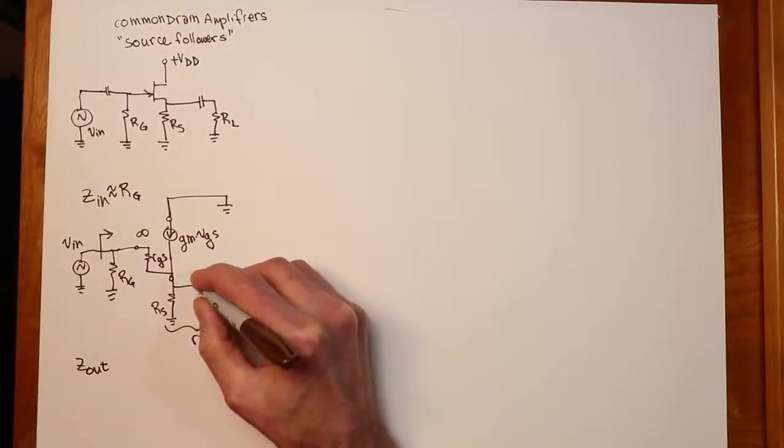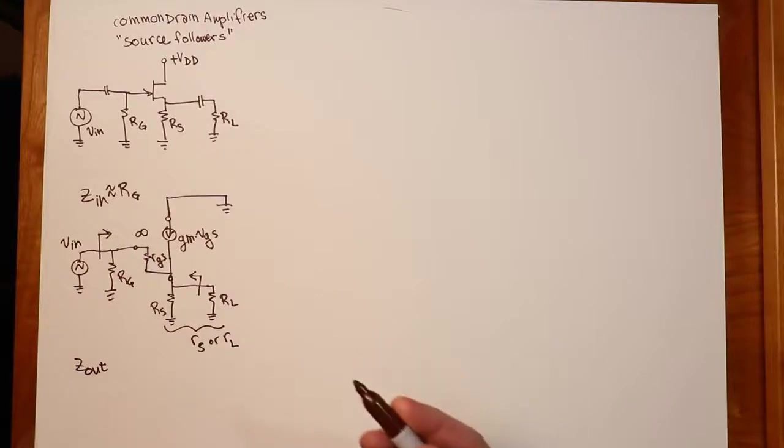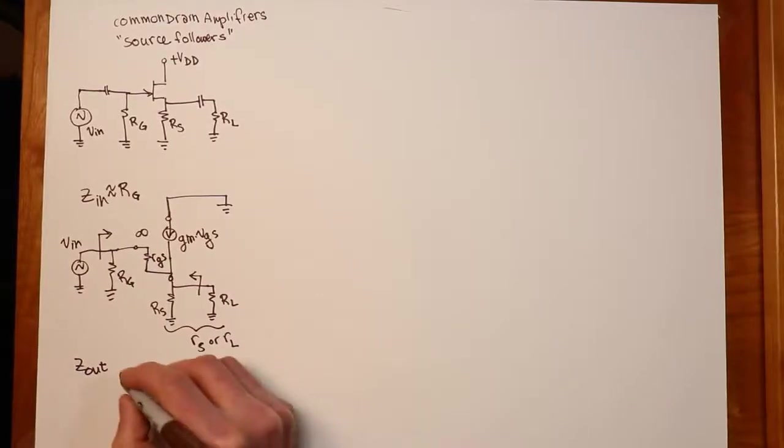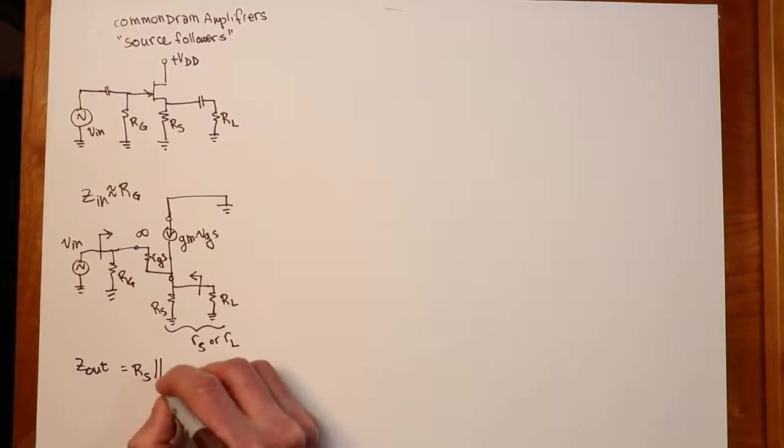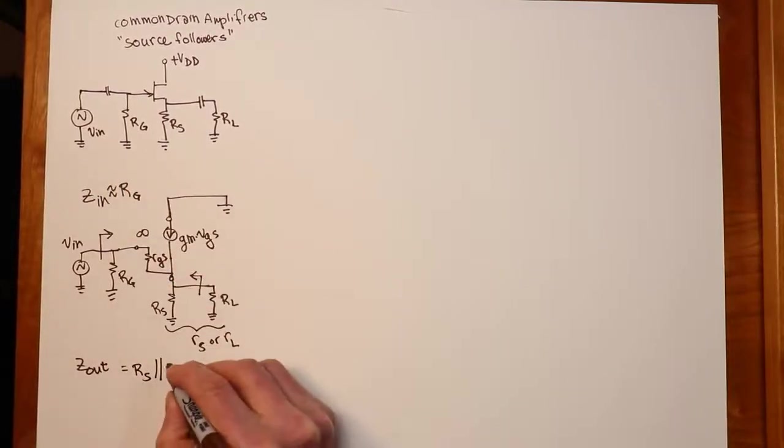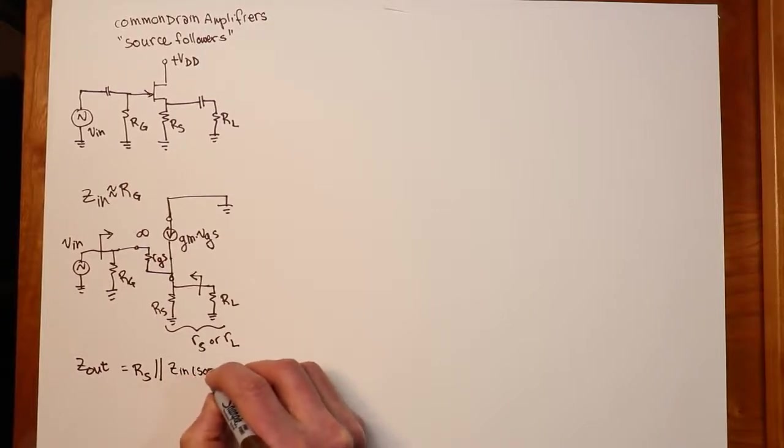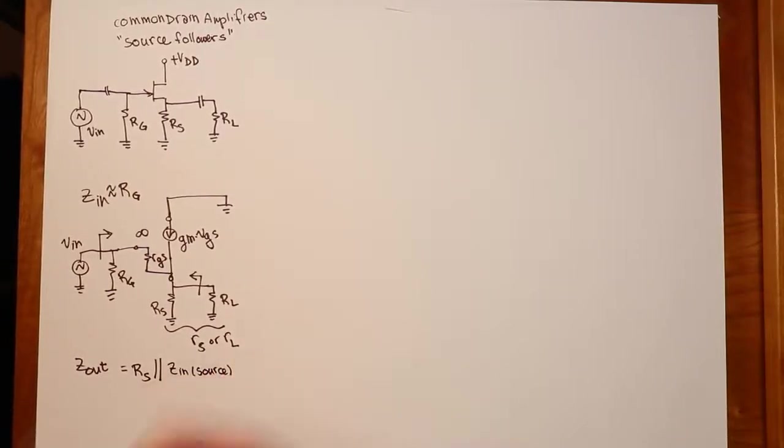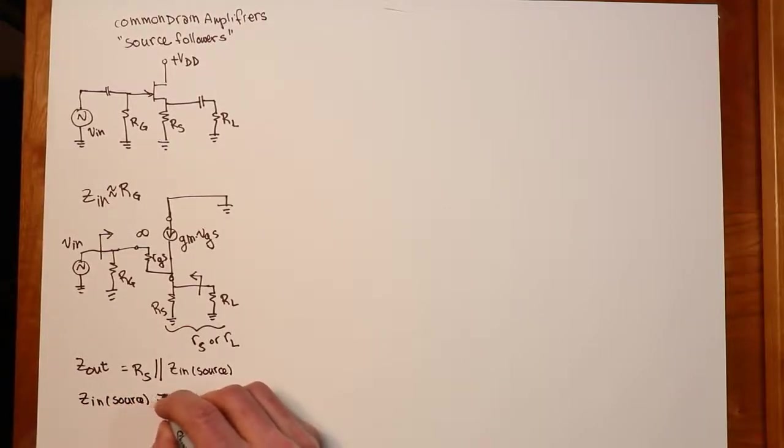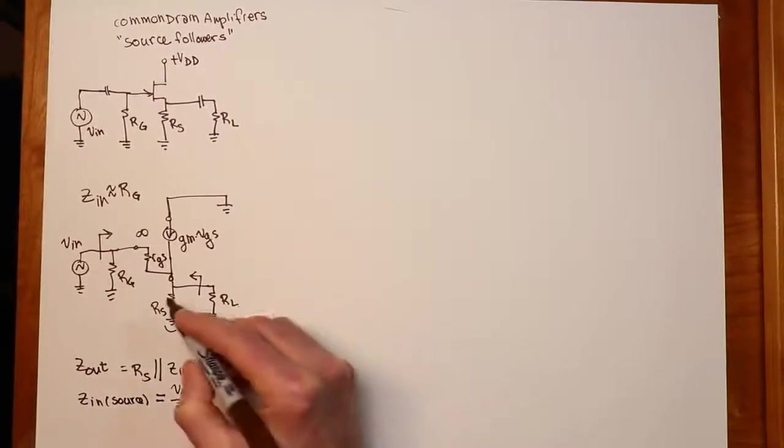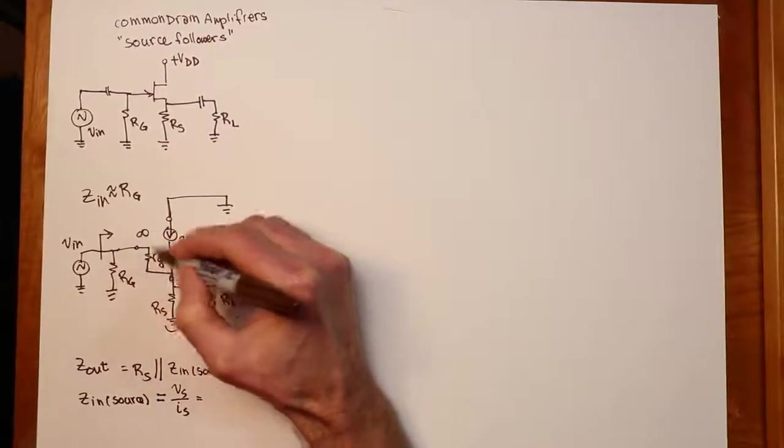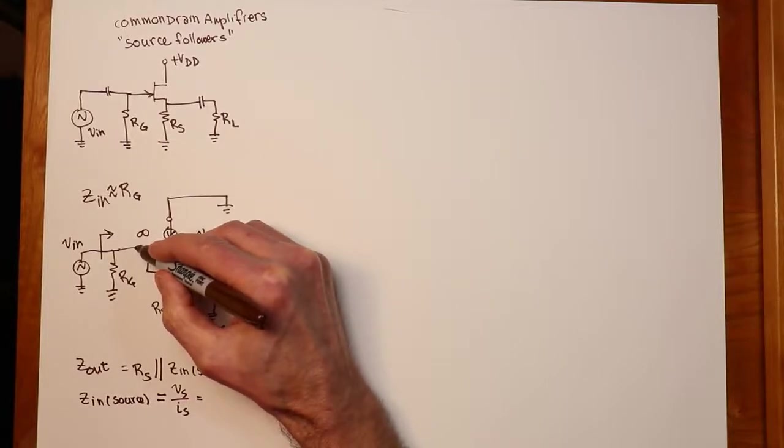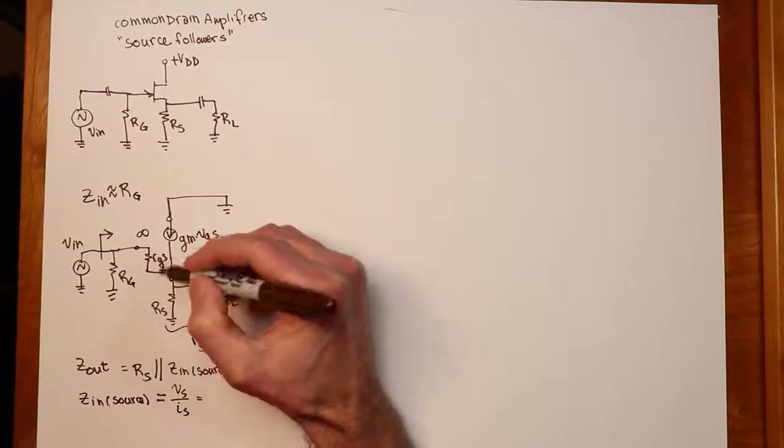Now the ZOUT. You would be sitting back here looking into the source of the FET. What do we see in that case? We're going to see that biasing resistor in parallel with the impedance looking into the source. Well, what is that piece? Z into the source, you can sort of define this through an Ohm's law relationship. That's basically just VS over IS.